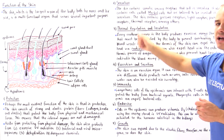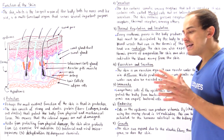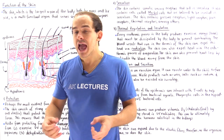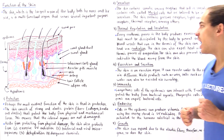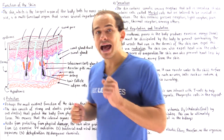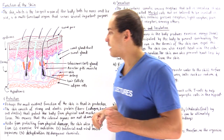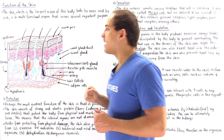Every exothermic process in the body — such as cellular respiration — produces excessive amounts of heat. If that heat is not expelled, it will raise the core temperature. The body stores that heat in the blood, and as the blood travels through the blood vessels in the dermis, it radiates the heat outward to the outside of the skin.